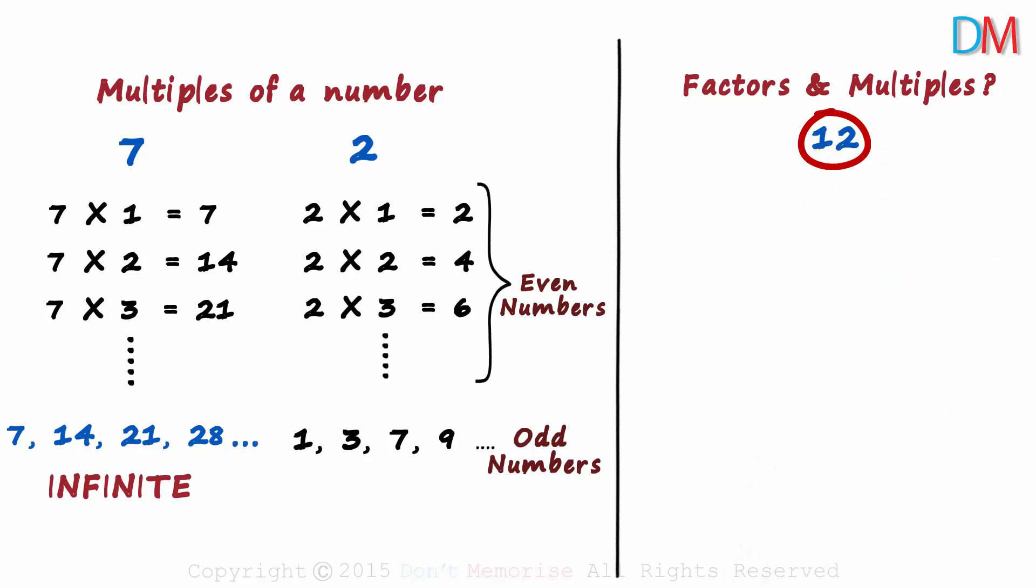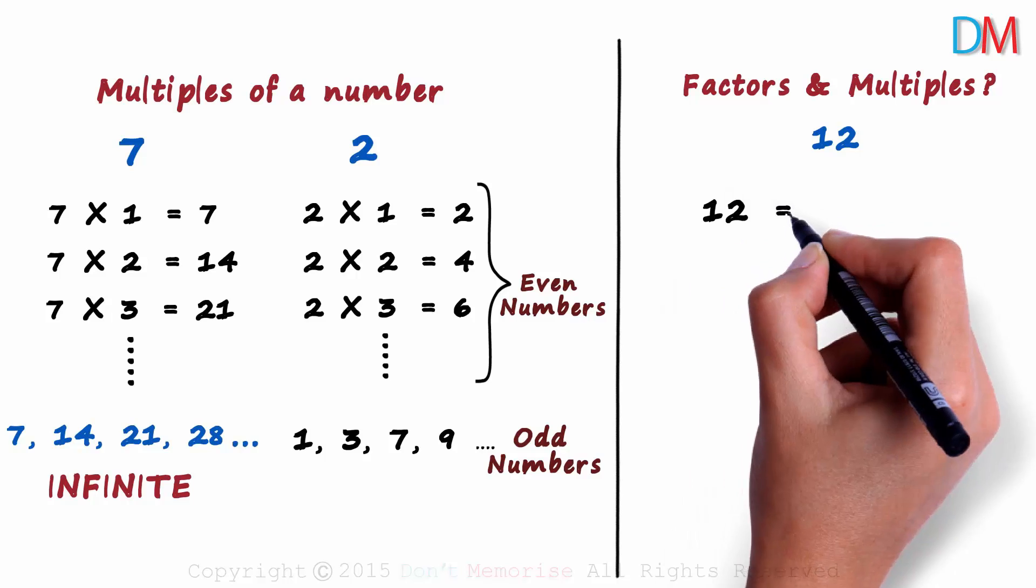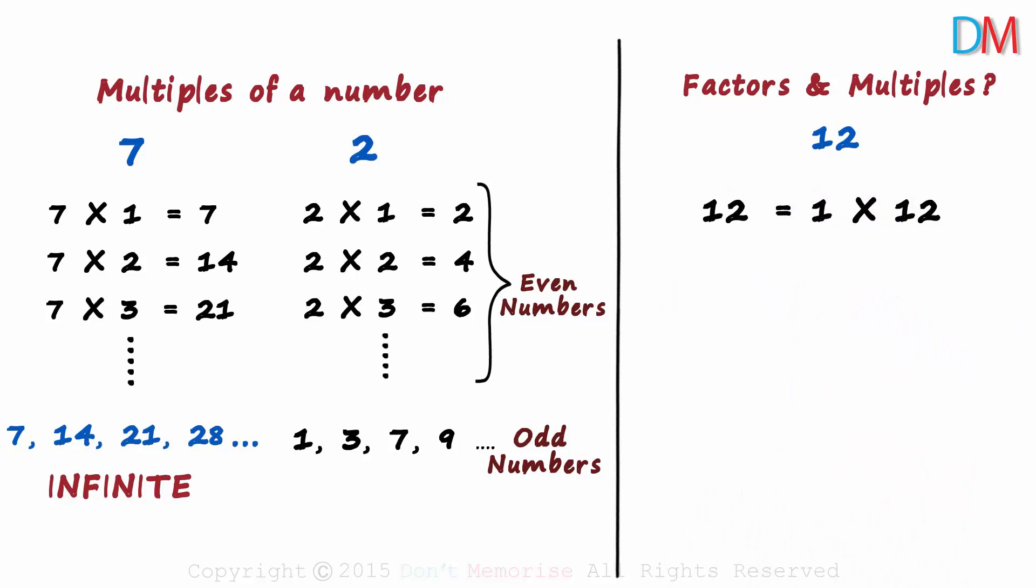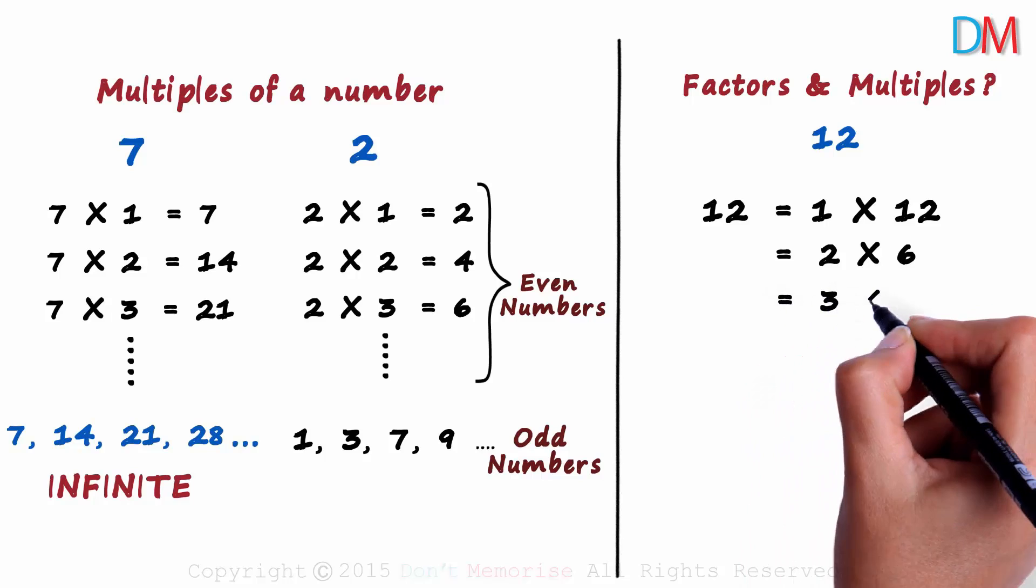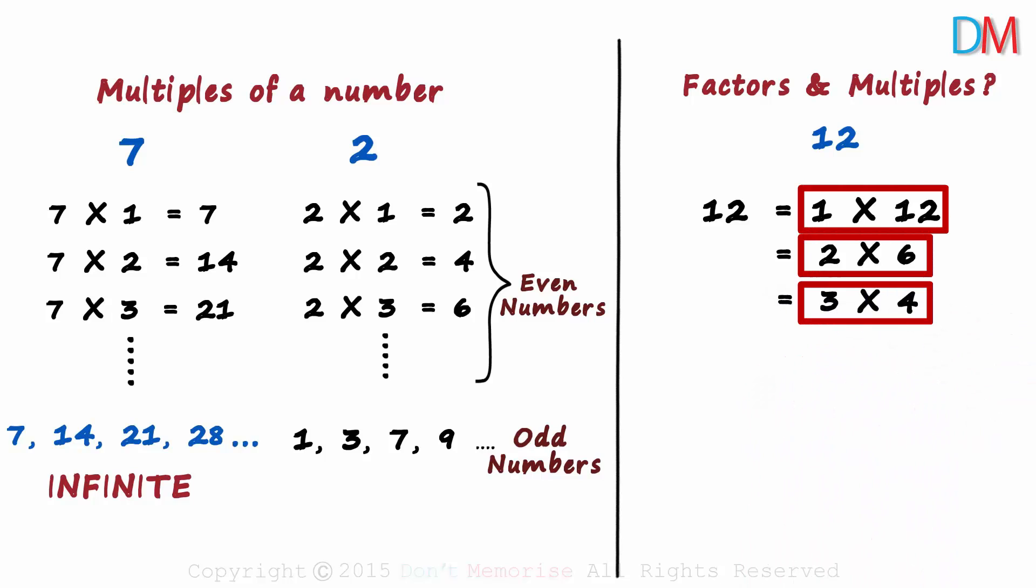To find the factors of 12, we try writing it as all possible products of 2 numbers. 12 can be written as 1 multiplied by 12. It can be written as 2 multiplied by 6 and 3 multiplied by 4. These are the only possible combinations.